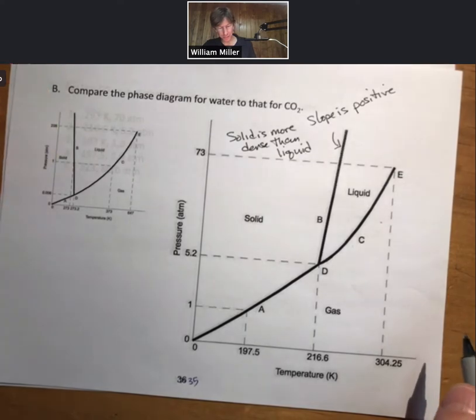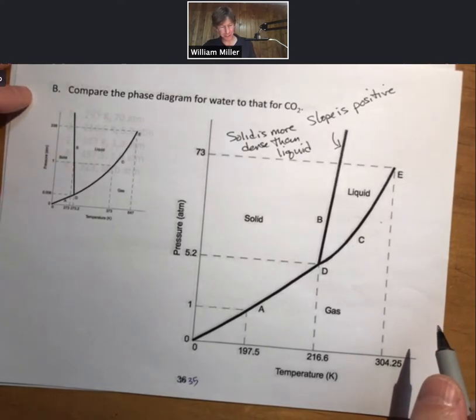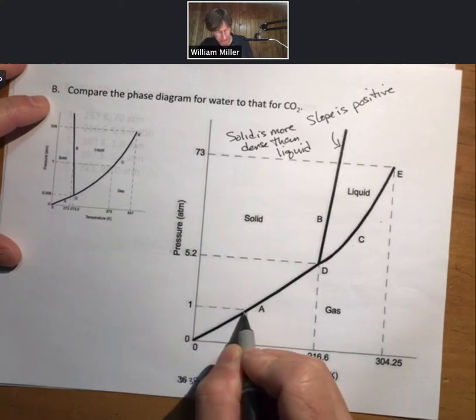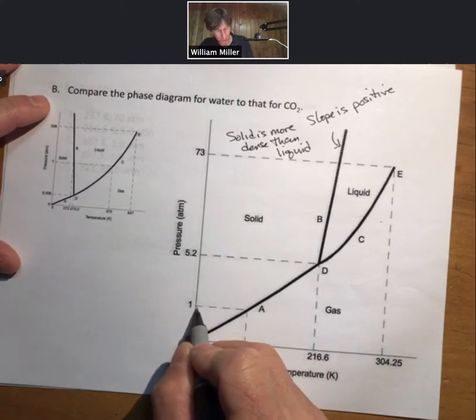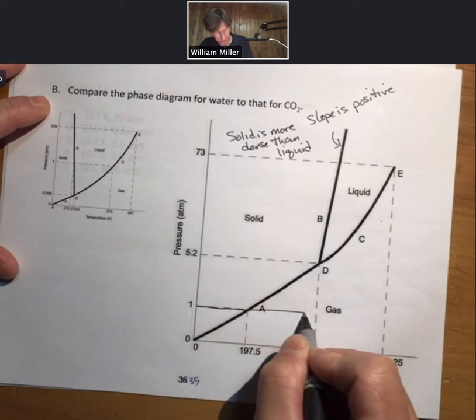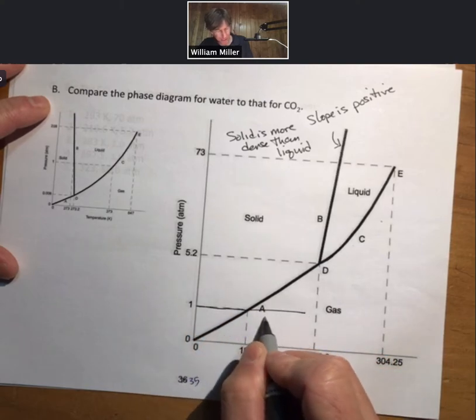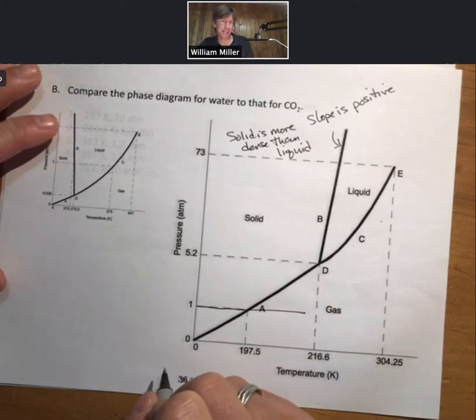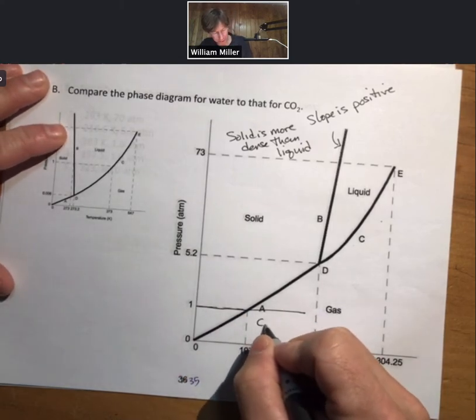We're comparing the phase diagram for CO2. We can see that one atmosphere is down here, so if we were to do the heating curve for CO2, it would go straight from the solid to gas phase. It will only cross the solid to gas phase, and that's why CO2 sublimes.